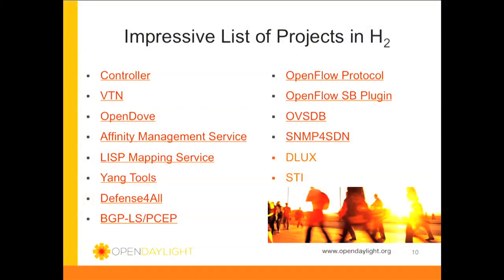We had an impressive list of projects. Some might say that's too many because we didn't trade off properly against stability. The projects were: the Controller — that's like the kernel. VTN, Virtual Tenant Networking, came from NEC. Open Dove came from IBM. Affinity Management Service came from Plexxi. LISP Mapping came from Context Stream — interestingly, they were not actually a member. There was a lot of confusion early on about whether you could contribute code or be part of OpenDaylight if you weren't a member. Of course, it's an open-source project, so you can. Membership is about funding, governance, and all of that. But to be a developer, or even to get on the TSC or the board, you don't have to be a member.